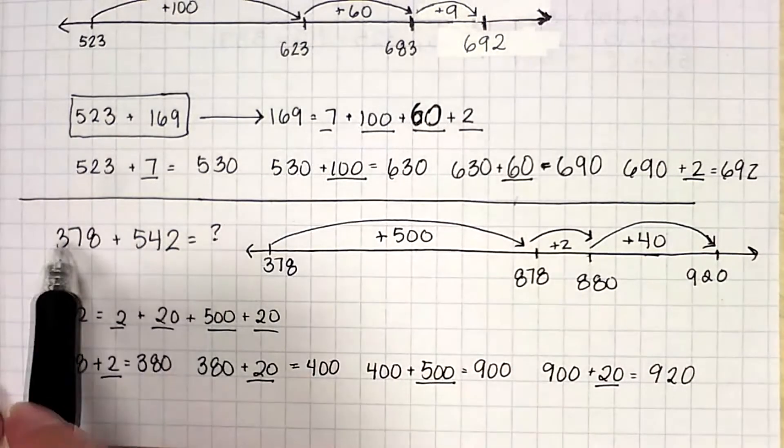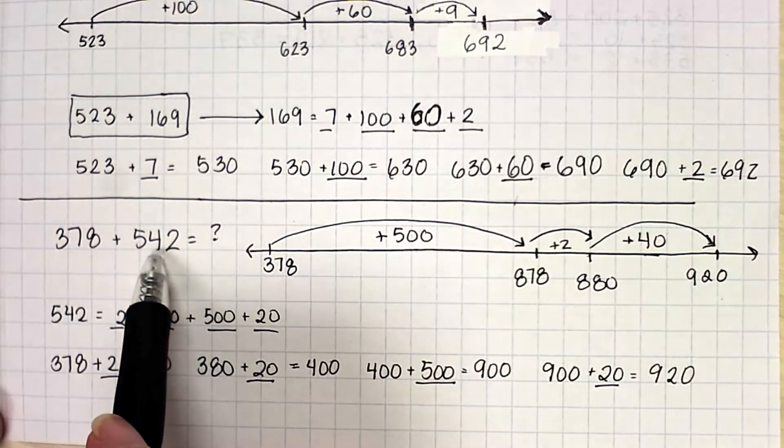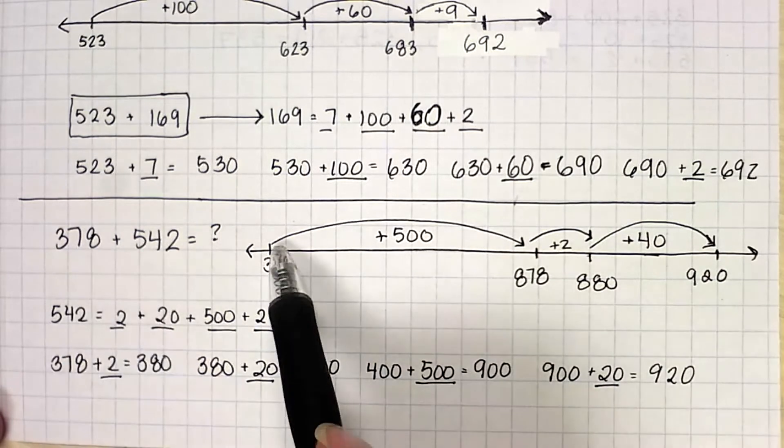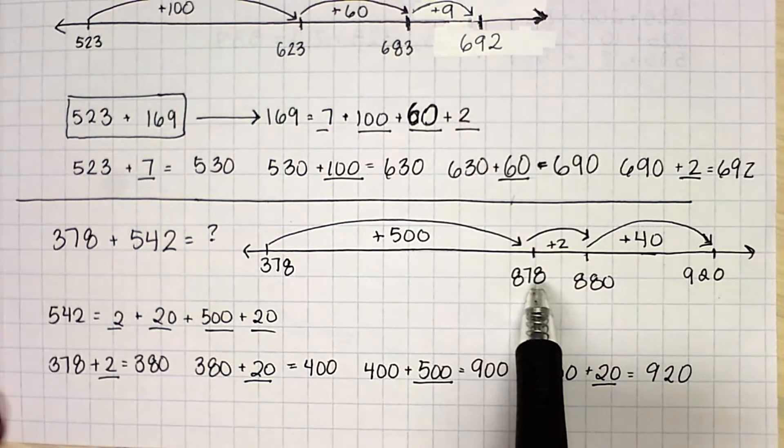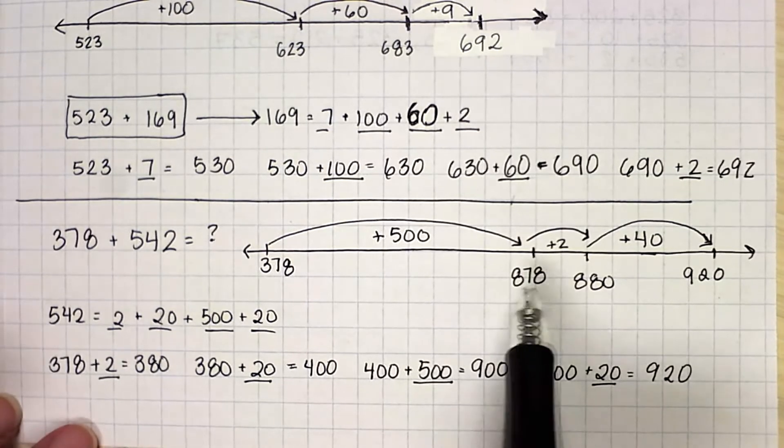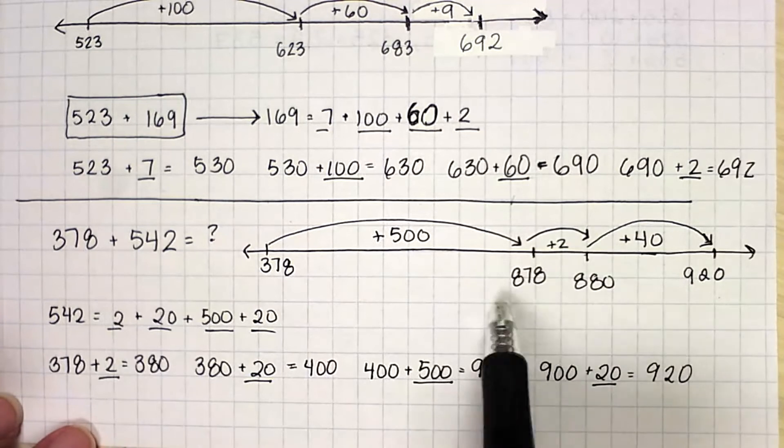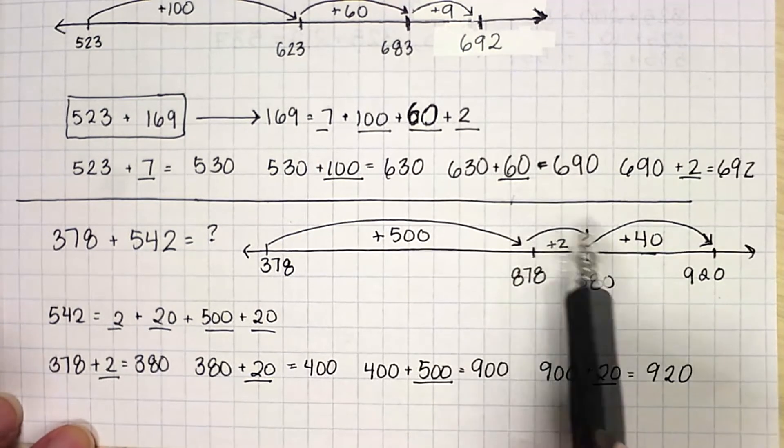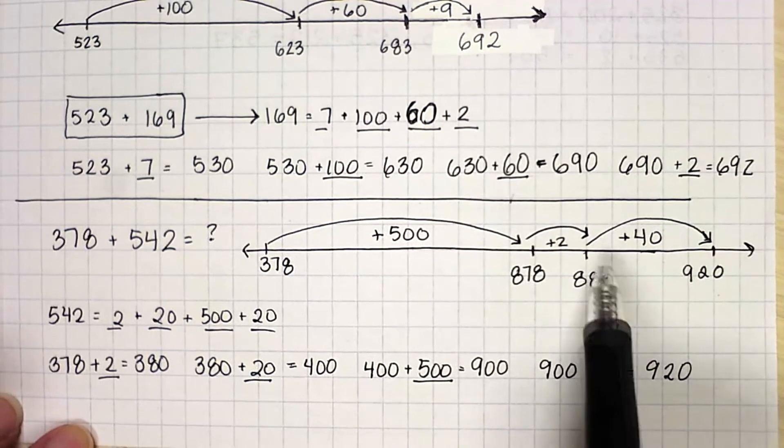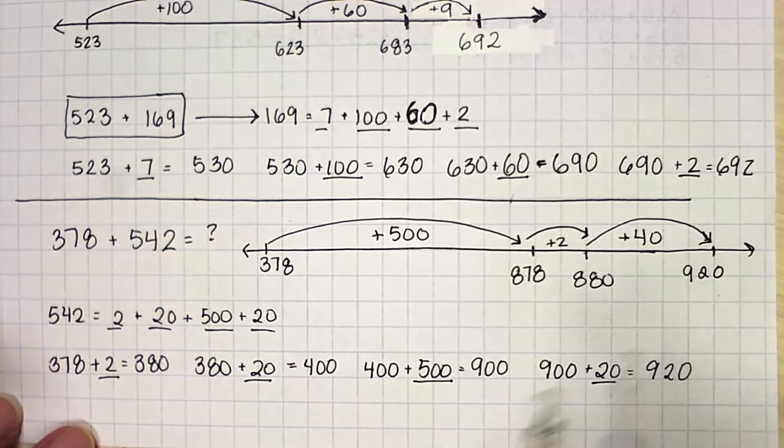If I have 378 plus 542, so 378 plus 500 got me to 878. So what I did here was I did it kind of the opposite. I added my ones place and then my tens. 878 plus 2 got me to 880. 880 plus the 40 got me to 920.